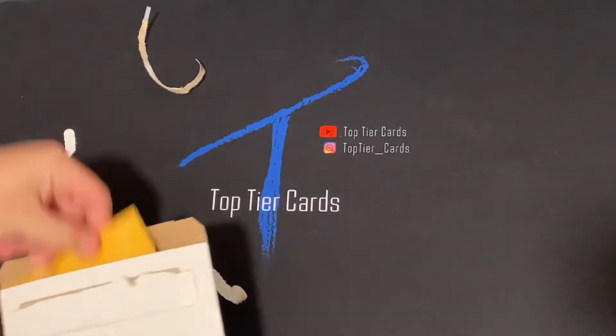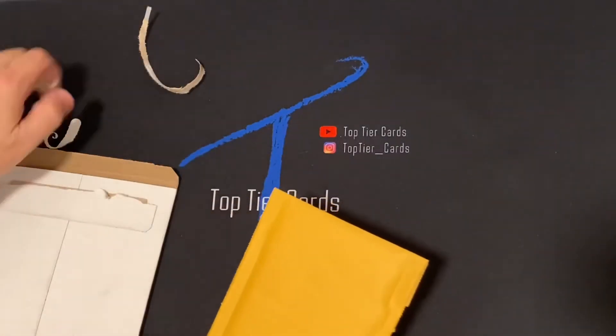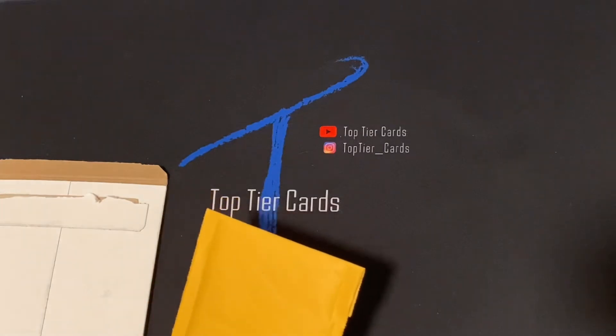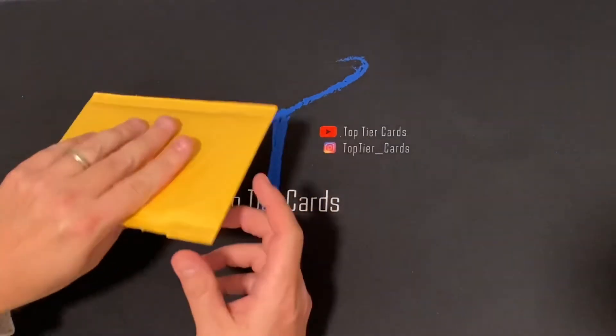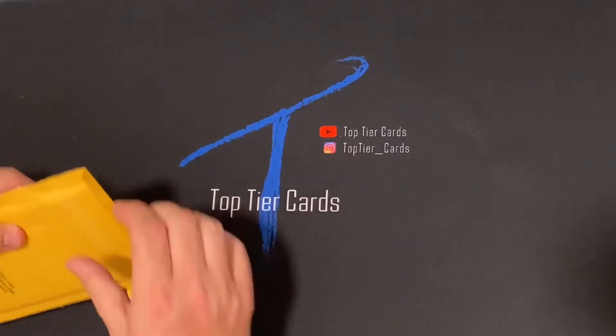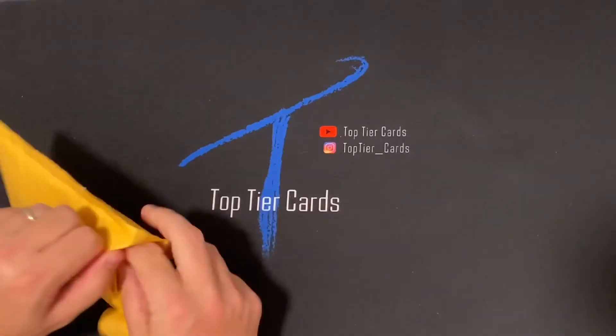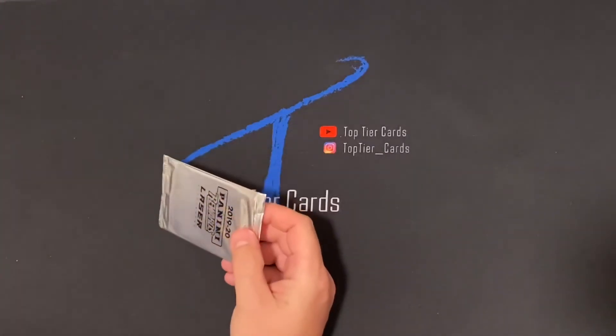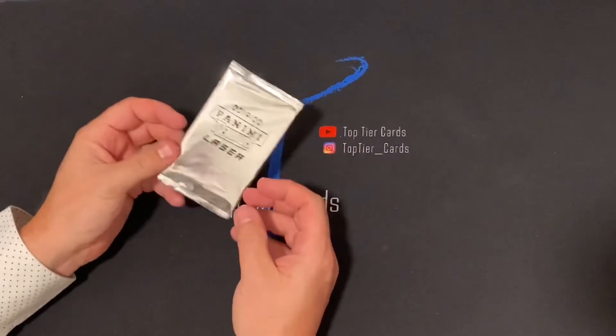The checklist is 48 people and you can get Zion and Ja, but you can also get Gardner Minshew, Dwayne Haskins. So I kind of debated whether I just wanted to sell this pack sealed on eBay or just rip it.